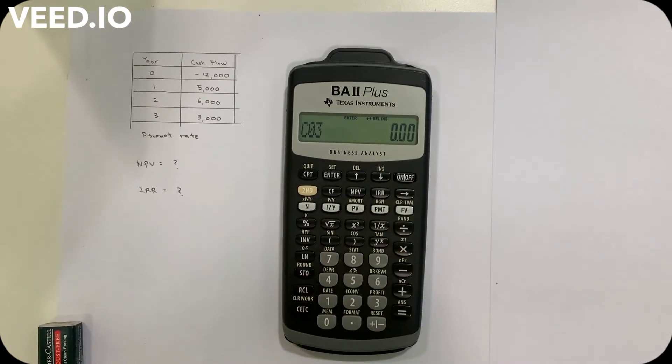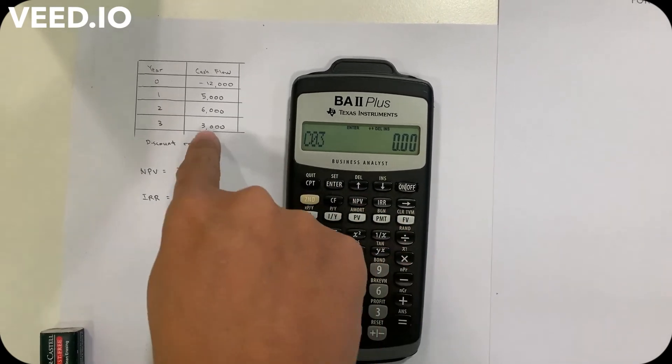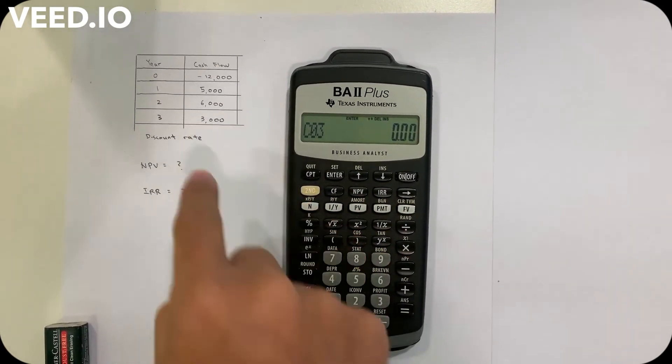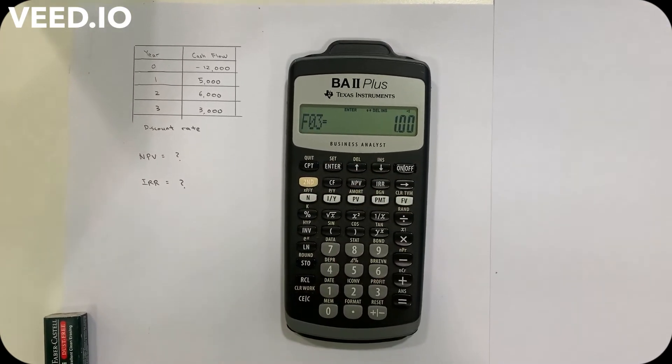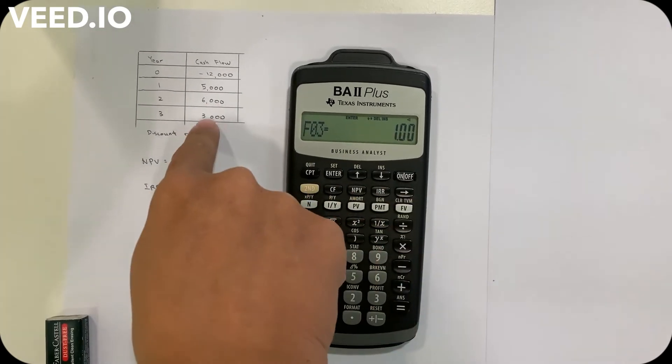Now I get C03. Here I key in 3,000, press enter and going down again. Make sure the frequency here is one because this figure only appears one time.